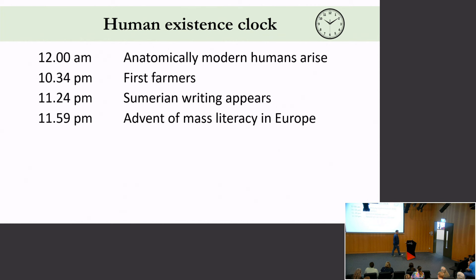I've condensed human existence into a 24-hour day. No one really knows when the first anatomically modern humans arose, but taking the best estimates: anatomically modern humans at midnight; at 10:34 the next day the first farmers arrive; at 11:24 is when Sumerian writing appears; and at 11:59 — one minute before midnight — is where we have mass literacy. That gives you some idea of how recent this invention is.